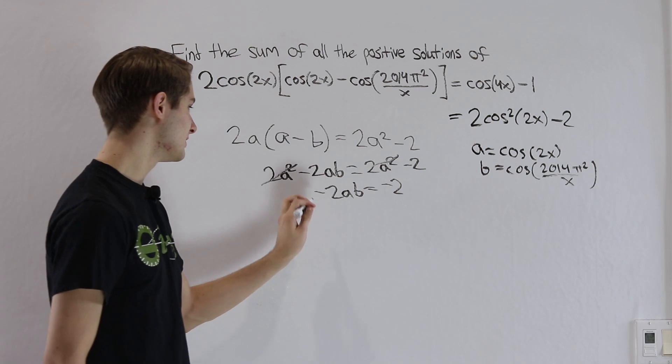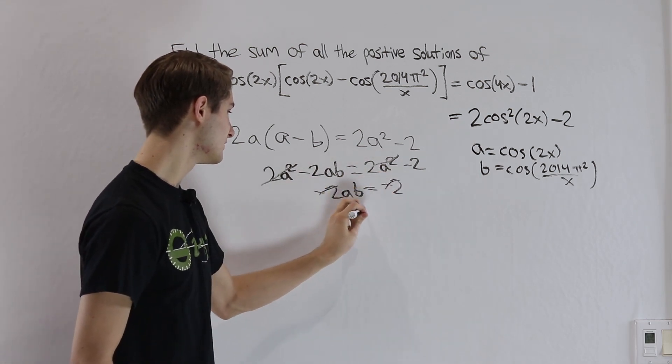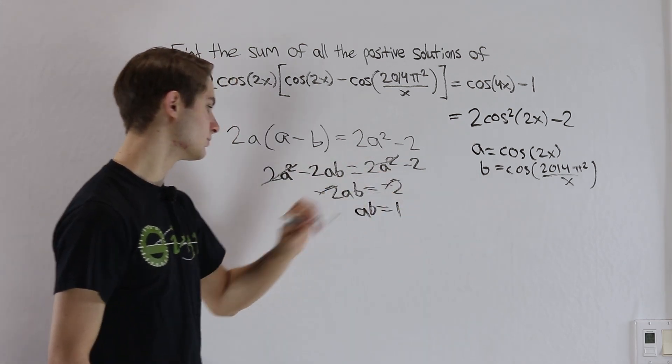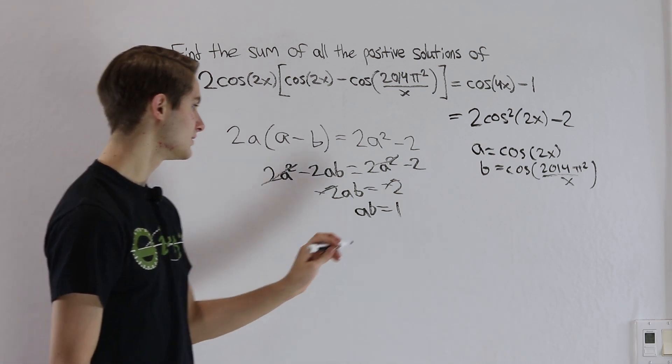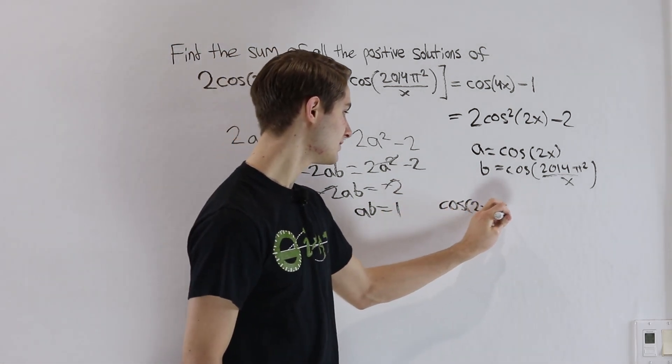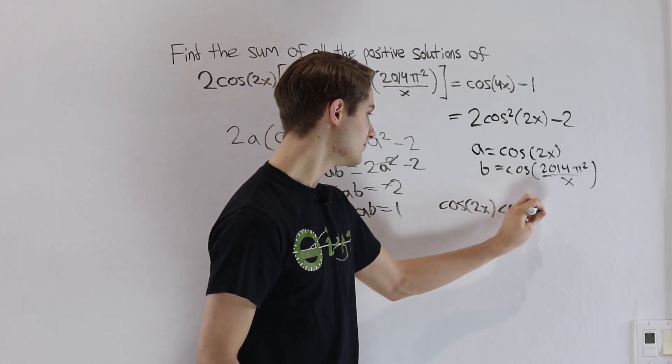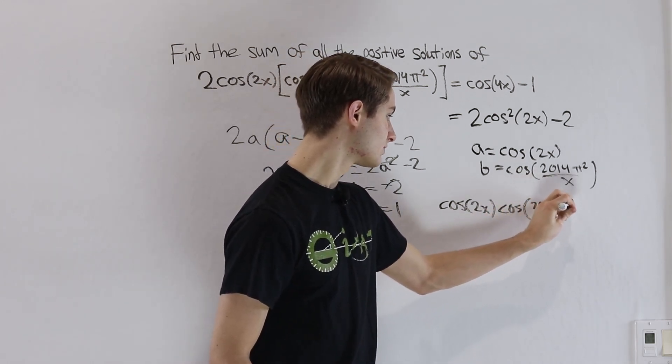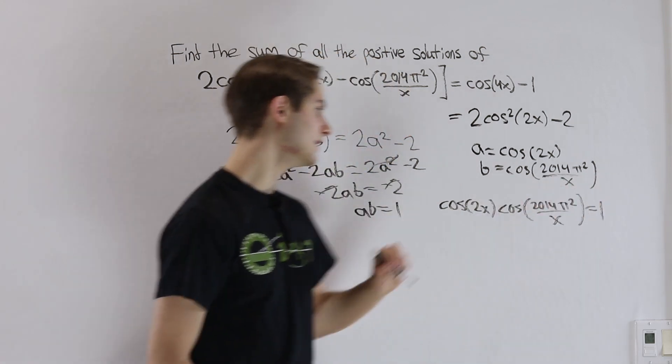Therefore, if we divide by negative 2 on both sides, we're going to get that AB is equal to 1. Or in other terms, that means cosine of 2x times cosine of 2014π squared over x must equal 1.